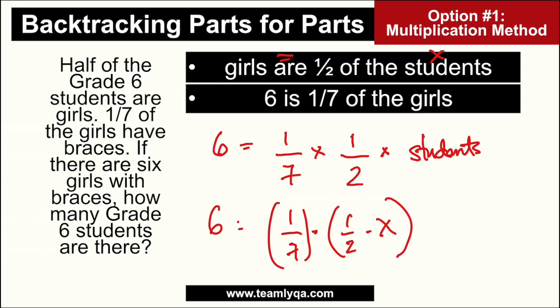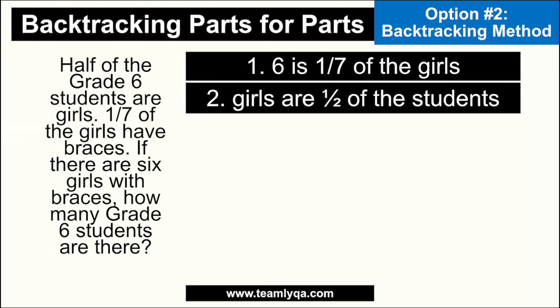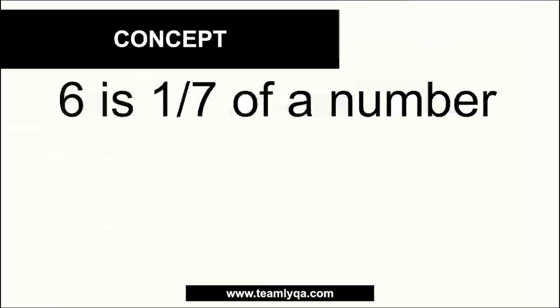Option number two is to use the backtracking method. The backtracking method is basically starting from the end. The end value is six students, and you work backwards. So, even though the problem sequence is: (1) girls are one-half of the students, and (2) six is one-seventh of the girls — using backtracking, we reverse the order. First, think about: six is one-seventh of the girls. Then, once you get that number of girls, they are one-half of the students — that's what you solve next. So, how do we do that? First: six is one-seventh of a number.